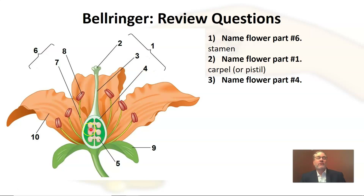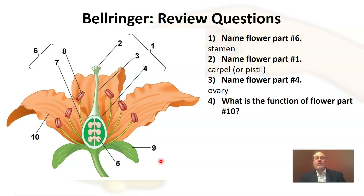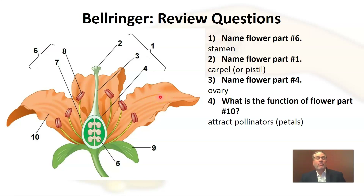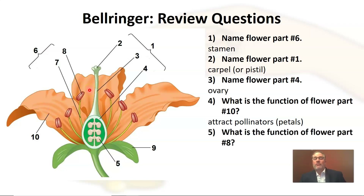Get flower part number four. Part four is this protective chamber — it protects the structures inside. Our part number four is the ovary. Now, what is the function of flower part number ten? These brightly colored and fragrant structures are of course the petals, used to attract pollinators — mostly insects.